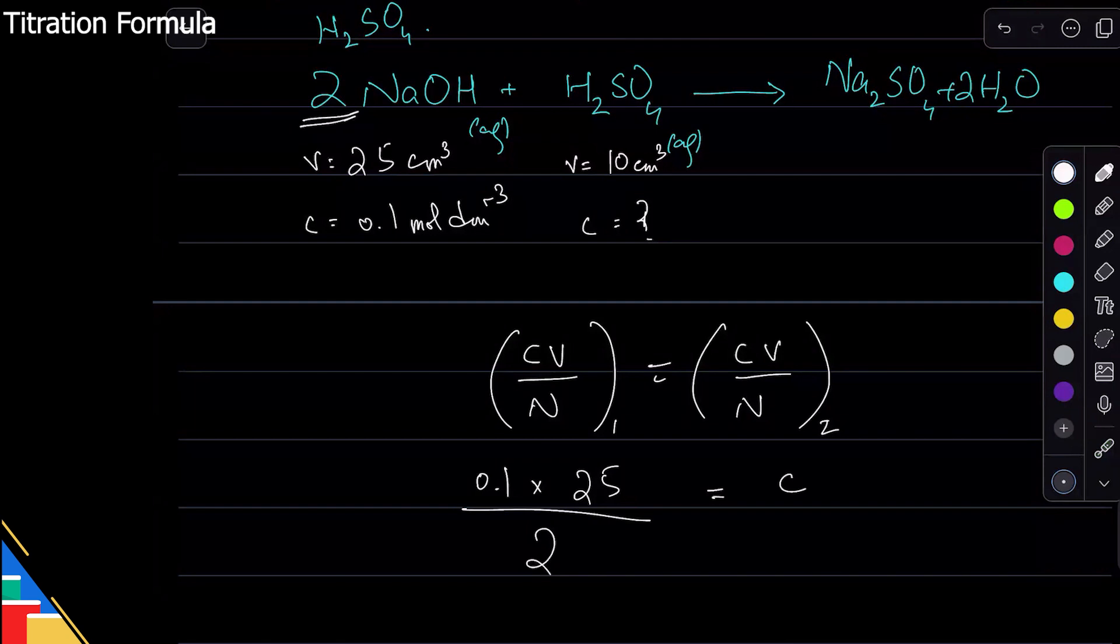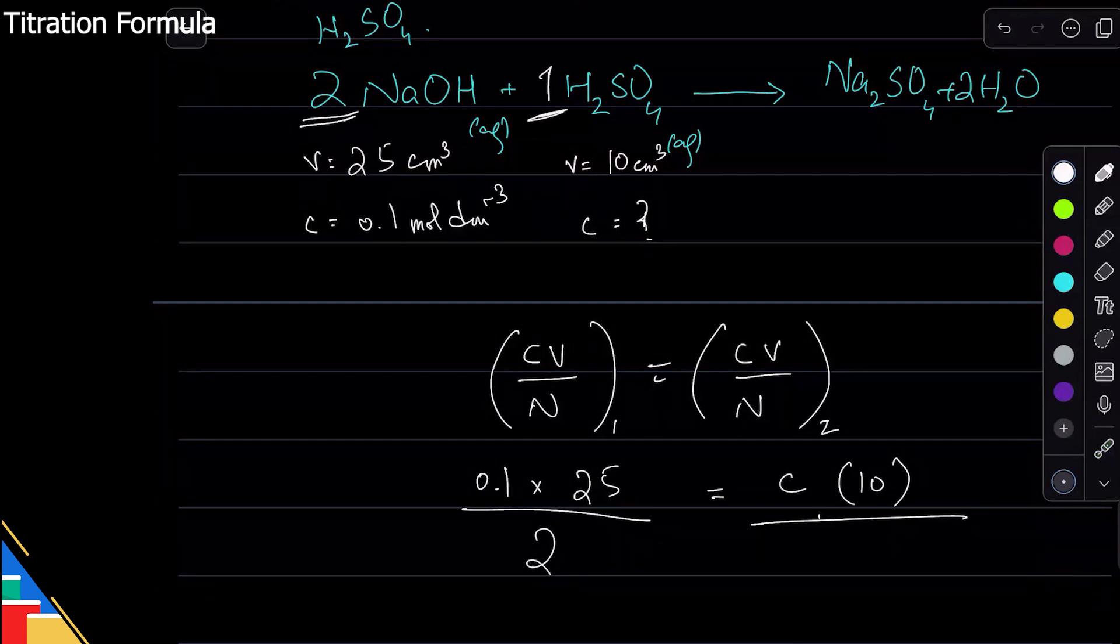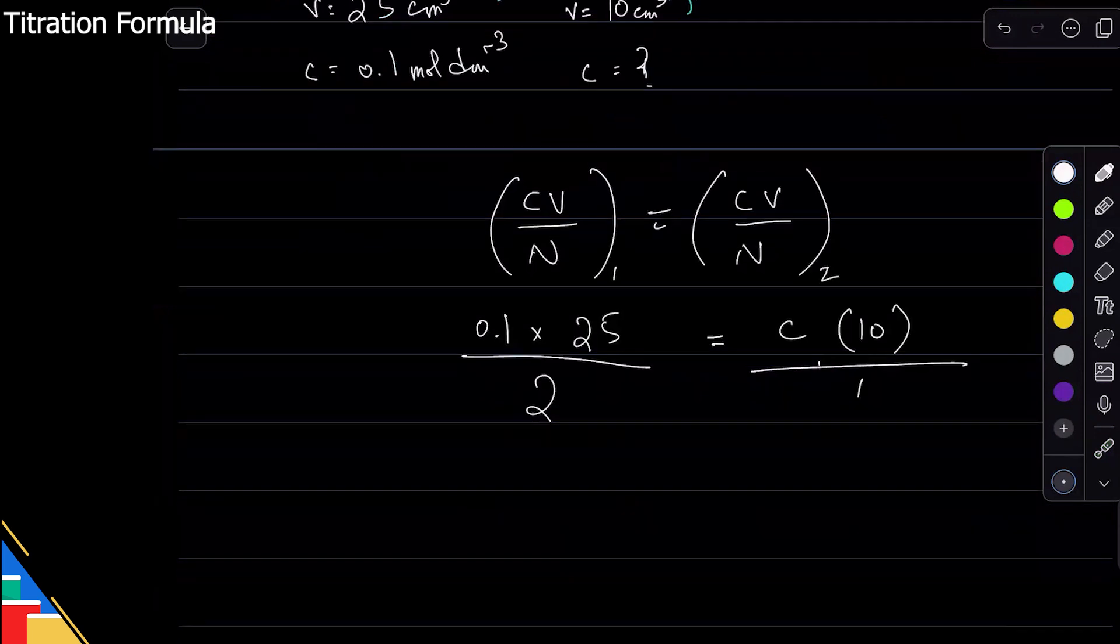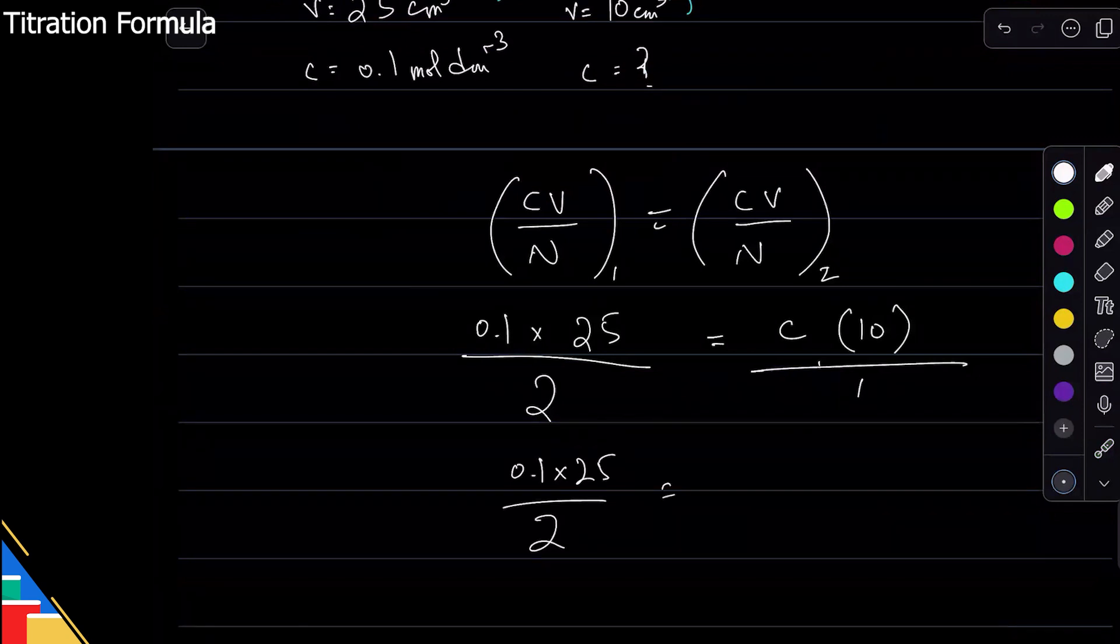Similarly, for acid we don't know the C. We know the volume is 10, no need to convert to dm³, divided by 1. When it's not written, it is 1. So this gives me 0.1 times 25 over 2 is equal to 10 times C.